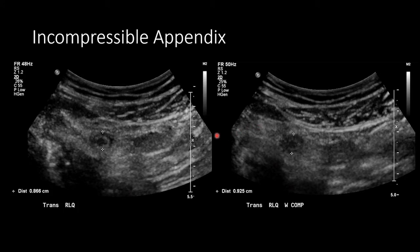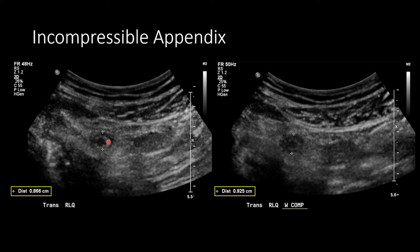Another key feature for diagnosing acute appendicitis — best and really only accomplished with ultrasound — is determining whether or not the appendix is compressible. Here I'm showing a short axis view of the appendix with both uncompressed and compressed images. The ultrasonographer applies firm then stronger compression to see if the appendix, which measured greater than 8 millimeters, will collapse with pressure. In this case, there is no significant change in the diameter when compressed versus non-compressed. Also note the large amount of echogenic fat surrounding the appendix, another sign of acute inflammation.